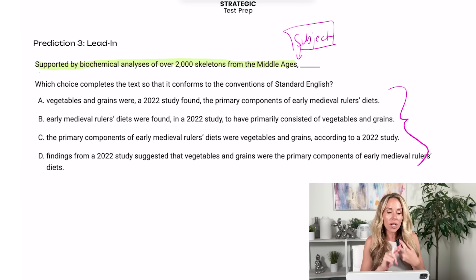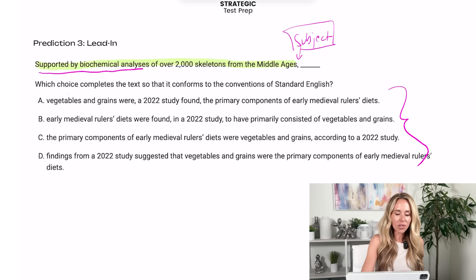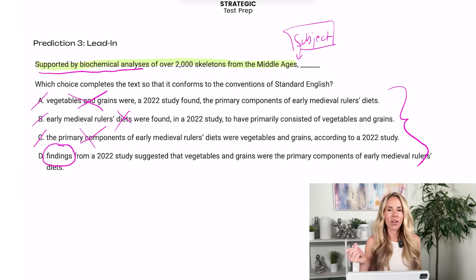So in this case, the subject is supported by biochemical analysis. So when I go through the answer choices, vegetables and grains aren't going to be supported by biochemical analysis. Diets won't be supported by biochemical analysis. The primary components of the diets won't be supported by biochemical analyses. Findings are what are supported by analyses. So I'm going to pick D.